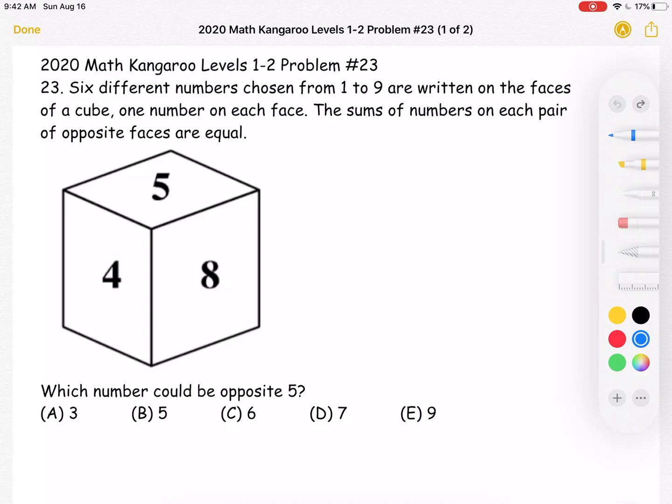Which number could be opposite the 5? A, 3. B, 5. C, 6. D, 7. Or E, 9. This is the problem as it originally appeared on the test.